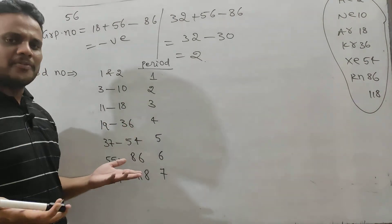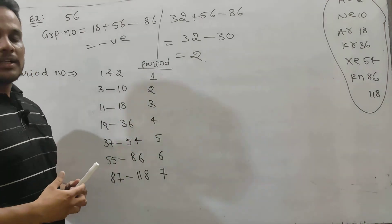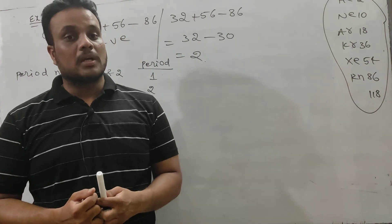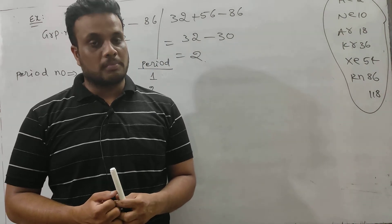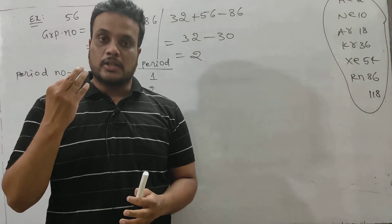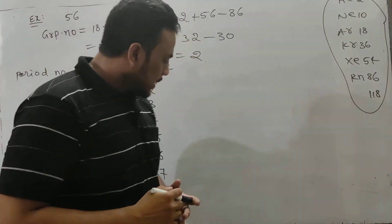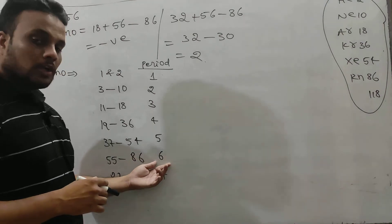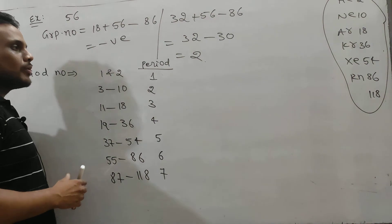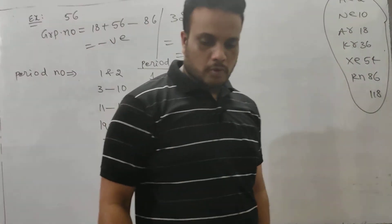The sixth period is the longest period. And group number 3 is the largest group in the periodic table. Because all F-block elements, lanthanum, actinium, scandium, yttrium — 4 from D-block and 28 from F-block — 32 elements belong to group number 3. That is the largest group. And 32 elements make the sixth period the longest period in the periodic table. So on the basis of given information, you can calculate group number and period number. Thank you for watching my video.